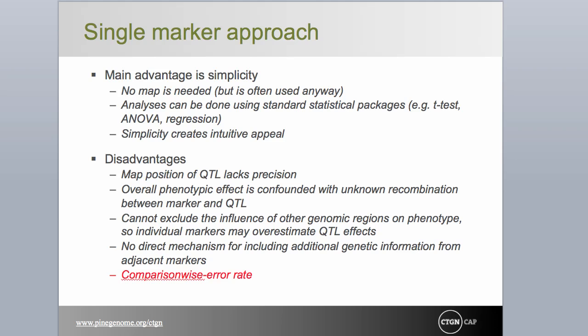There are other drawbacks to the single marker approach. It does not differentiate between one and multiple QTL when they exist on the same linkage group, which may result in overestimating the size of the QTL effect. Conversely, the magnitude of QTL effect may be underestimated due to increasing but unknown recombination between marker and QTL — the further the QTL is removed from the marker, the lower the estimated effect.